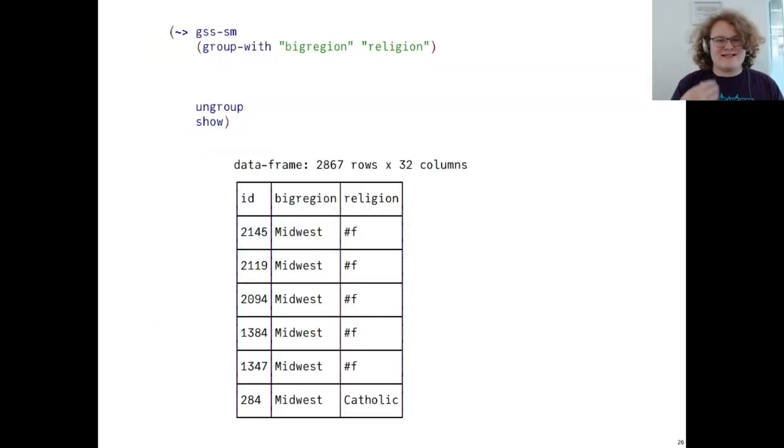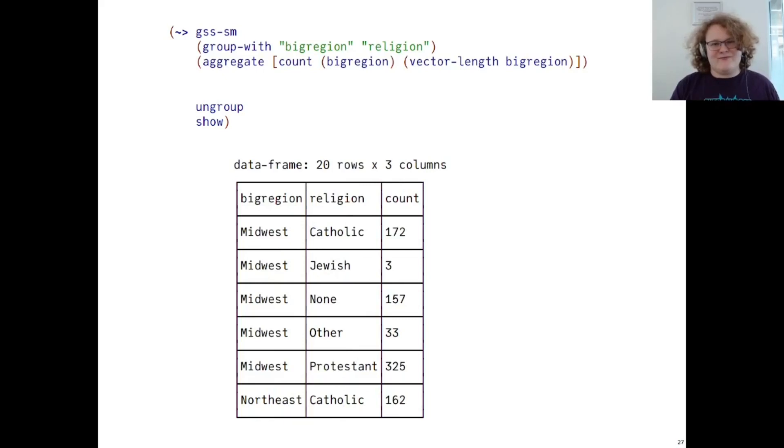So, how will we express the prior transformation using Sozzl? First, we read in our data, and then we group it with respect to the big region variable, and then the religion variable. This tells subsequent operations how to handle stuff. Then, we use the aggregate operator, which behaves somewhat like fold. We create a new variable count that depends on the variable big region, and then we compute the length of that variable. Namely, because of our grouping, this works within every possibility for the variable big region, and within every possibility of the variable religion within that. So, this gives us the count statistics that we want. Now, we know that there are 172 Catholics in the Midwest.